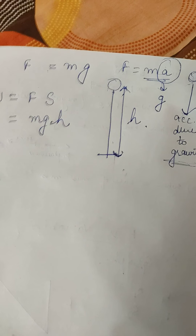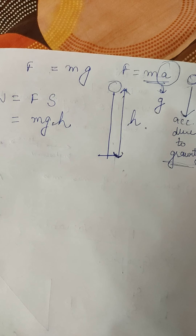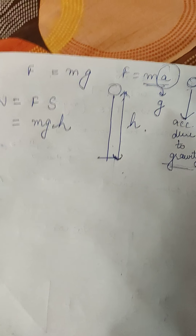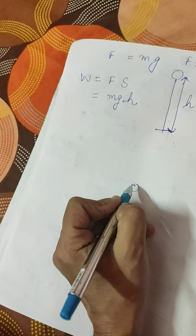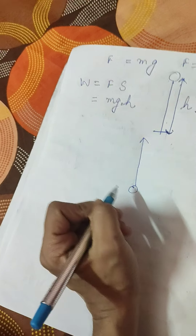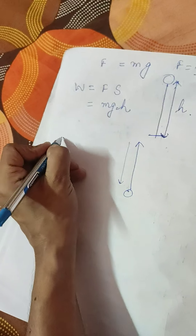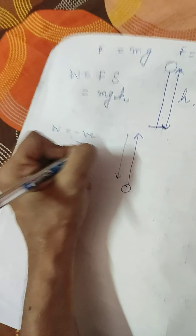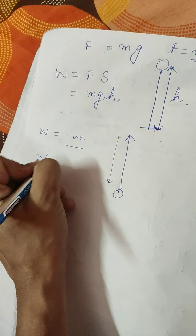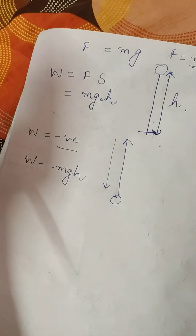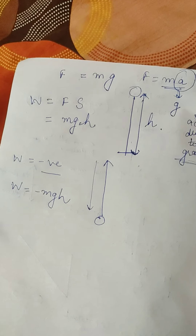Similarly, if a body of mass M moves upward through a height H — the body is moving upwards but the force of gravity acts downwards — so the work done will be negative. The work done becomes −MGH. So MGH is the work done by the force of gravity, but here it is done against the force of gravity.